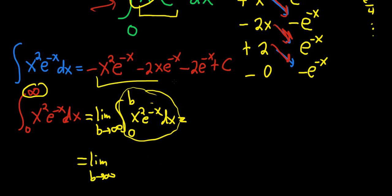Except I'm not going to write down the C because that's going to cancel, right? When you subtract, it's going to go away. So we have -x²e^(-x) - 2xe^(-x) - 2e^(-x). And we're going from 0 to b.